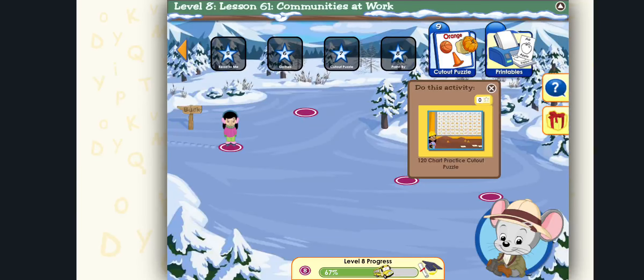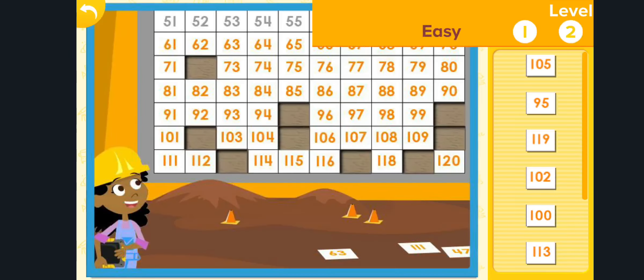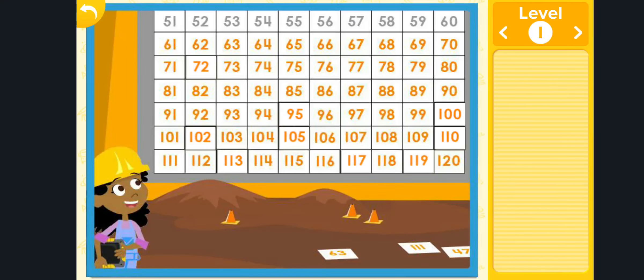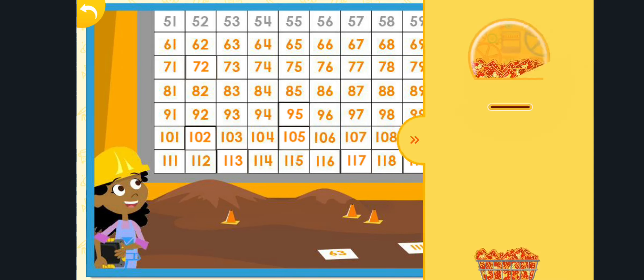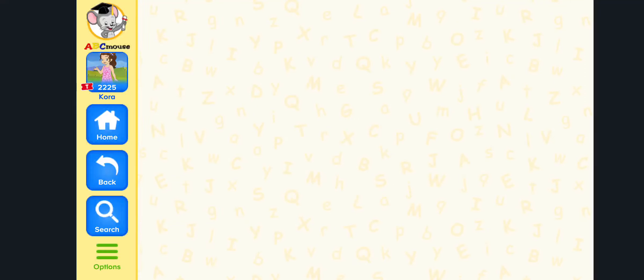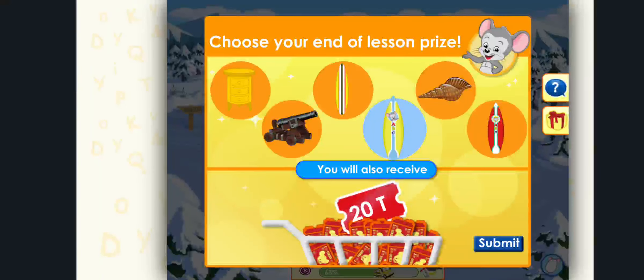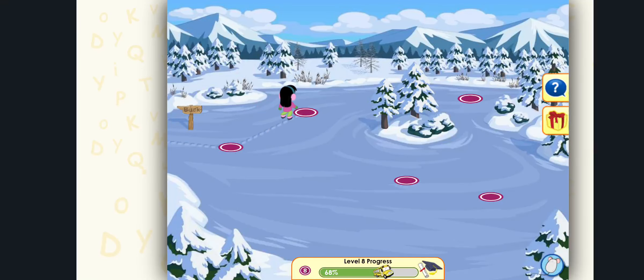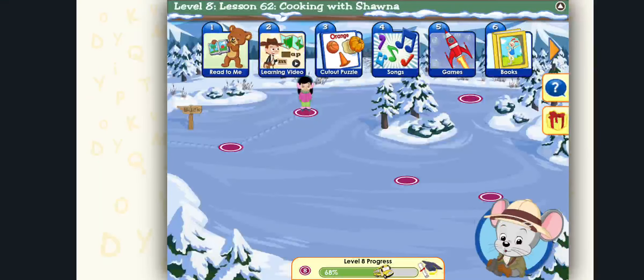Well done! One hundred and ten! Good job! You completed the one hundred and twenty chart! The baker is baking more cake! Good job!